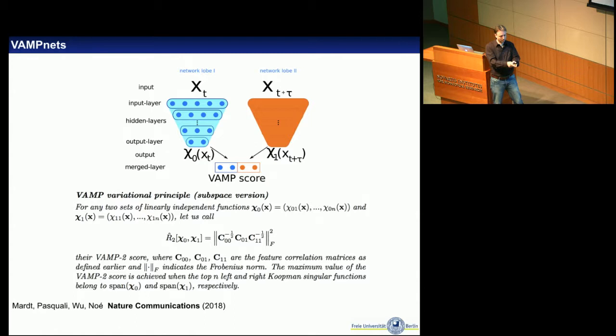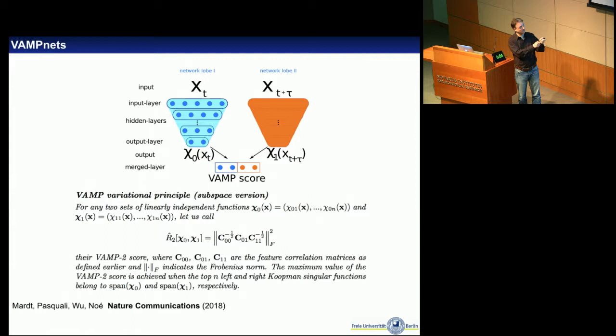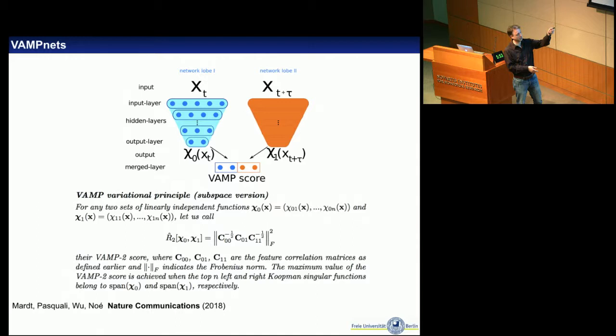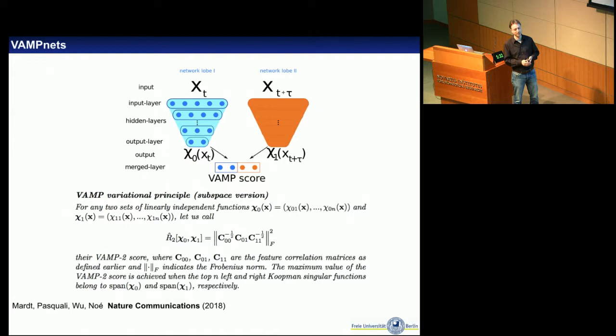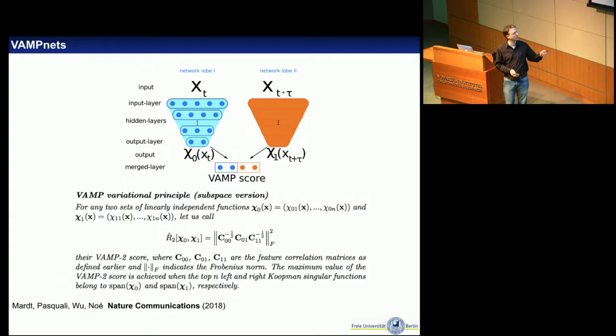The number of output neurons equals the number of metastable states we want. This vector sums to one over the output layer, probabilistically assigning configurations to metastable states — including multiple states if you're on a transition state. This defines a feature mapping directly to a coarse-grained metastable state assignment. All we need to do then is compute a transition probability matrix for going from one state to another in time tau — a very simple Markov State Model. All the work of featurization, clustering, and coarse-graining is already done by the network.